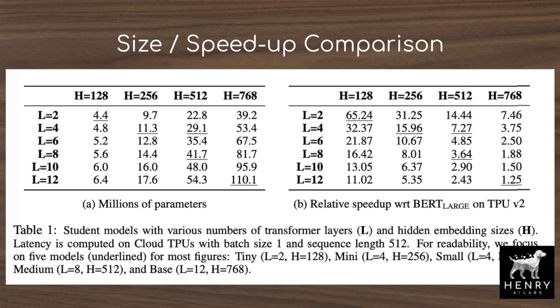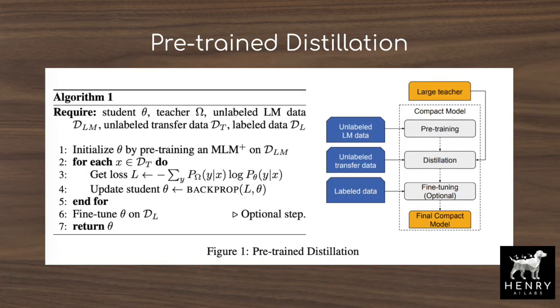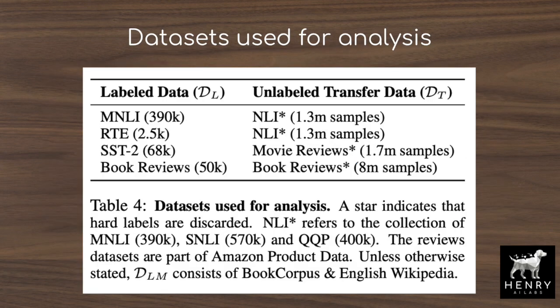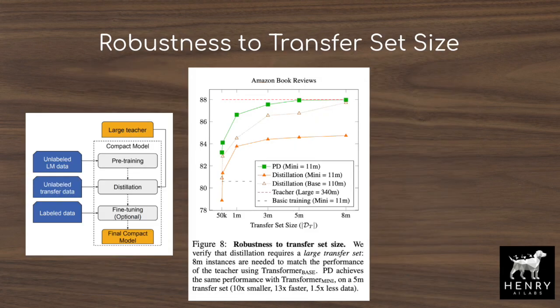Rather than initializing the smaller compact model randomly or by copying the weights of the teacher network before distillation, it helps enormously to pre-train the smaller model with masked language modeling as well. The algorithm explores using knowledge distillation on task-relevant unlabeled data. This is different from the data used for language modeling, like Wikipedia, Reddit articles, or the Books Corpus.